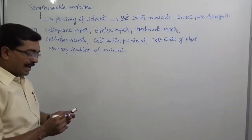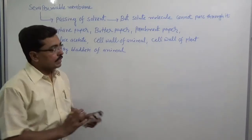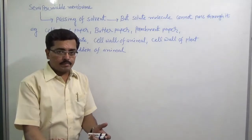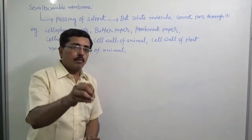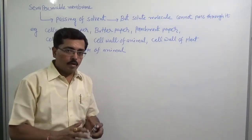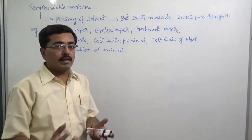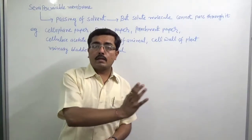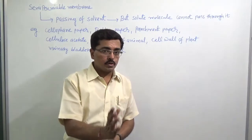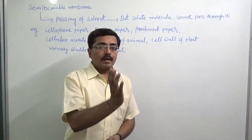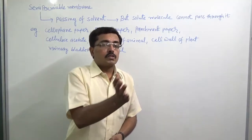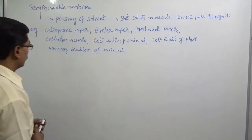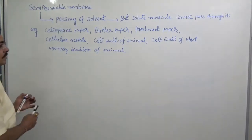This semi-permeable membrane plays an important role in osmosis phenomena. When we take a dry grape or an almond, put it in water during the evening, and observe it in the morning, we find that the dry grape or almond has swollen. Why does this swelling occur? The answer is osmosis. Due to the phenomena of osmosis the grape will swell, and the semi-permeable membrane plays the most important role in osmosis.